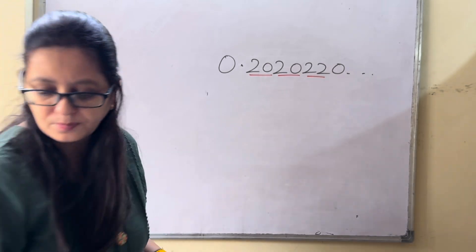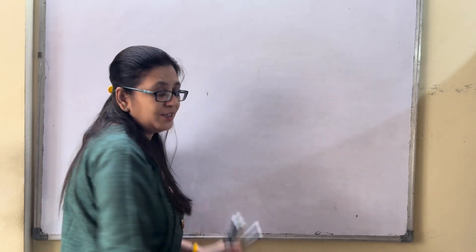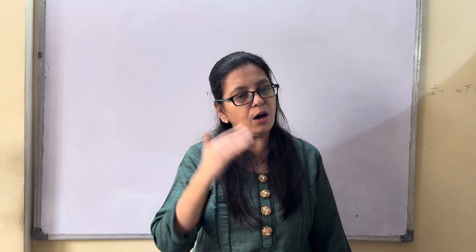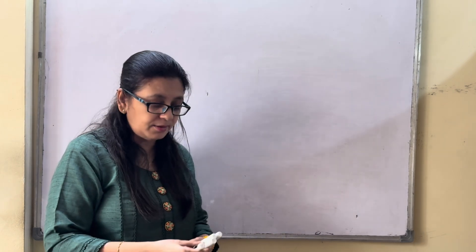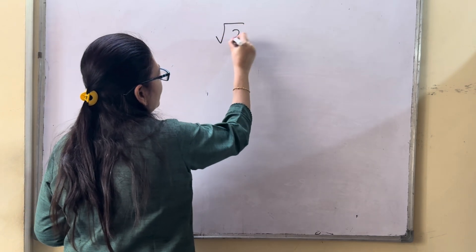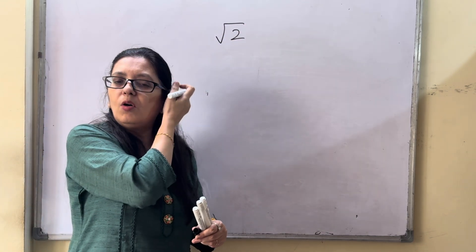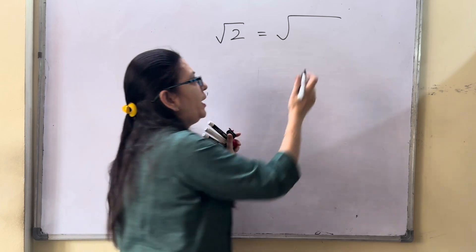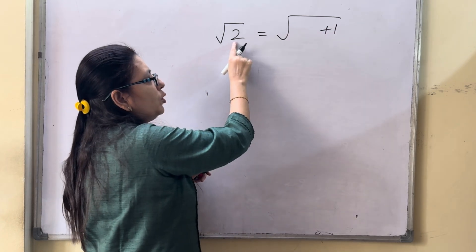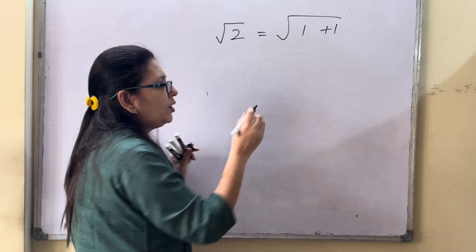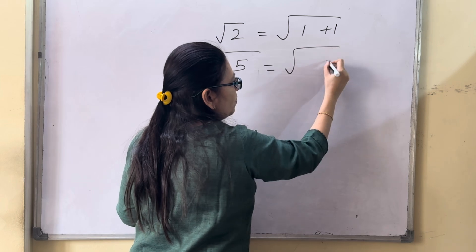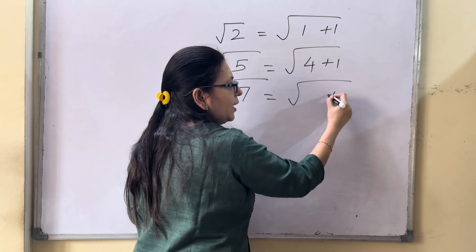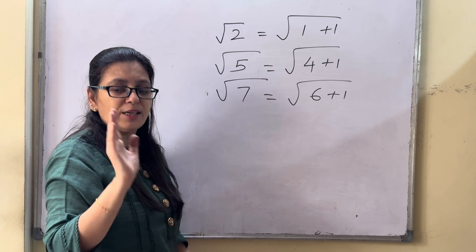Coming to the next part — representing an irrational number on a real line. We represented rational numbers on a number line; now how do we represent an irrational number? The pattern to follow is: always split the number so that you add 1. For root 2, do 1 plus 1; for root 5, do 4 plus 1; for root 7, do 6 plus 1.